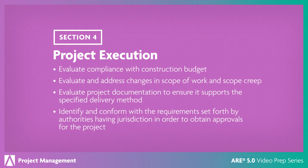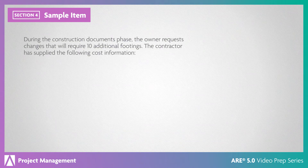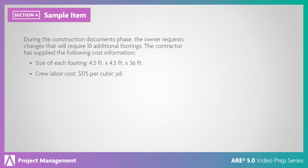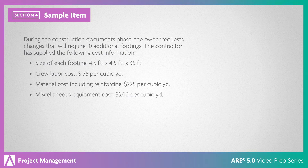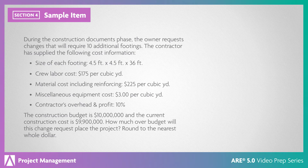This section assesses management of the project's execution. It is not about design-related decisions, but rather the necessary administrative procedures throughout the project. Let's look at a sample question. During the construction documents phase, the owner requests changes that will require 10 additional footings. The contractor has supplied cost information. The construction budget is $10 million and the current construction cost is $9,900,000. How much over budget will this change request place the project? Round to the nearest whole dollar.